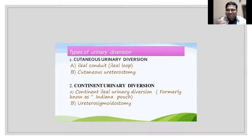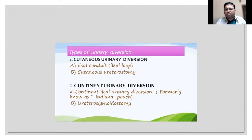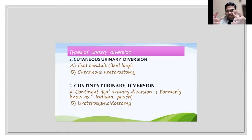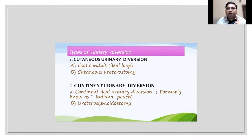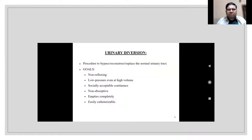The problem with ureterosigmoidostomy is mixing of stool and urine with a chance of reflux. Hemicock devised a hemicock pouch creating a colonic intussusception to act as a valve to prevent reflux, but these all failed. Despite being a simple, quick operation, patients died of metabolic complications before the cancer could kill them.